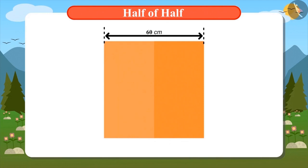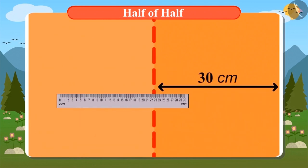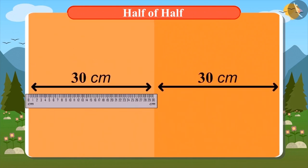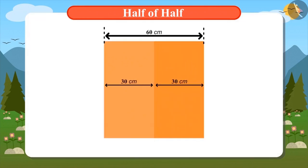When we open it, we see that the folding marks have divided the paper into two equal halves. Now, measure the distance from this line to the edges on both sides of the paper. By doing this, we came to know that the paper is now divided into two equal parts and each part is 30 centimeters. This paper is now divided into two halves. Yes.